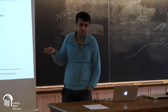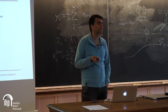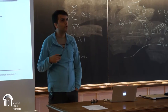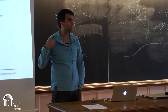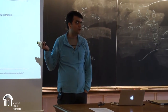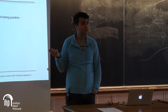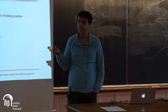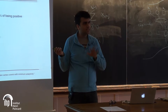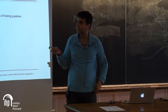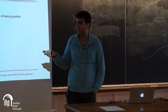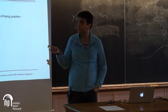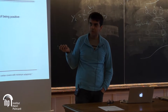One natural question: what if you don't know the number of defectives? What if the value of d is unknown — it could be any value from 0 to n? This is actually not too hard. There's a fairly easy algorithm that requires just order log n tests. The intuition will be useful throughout.